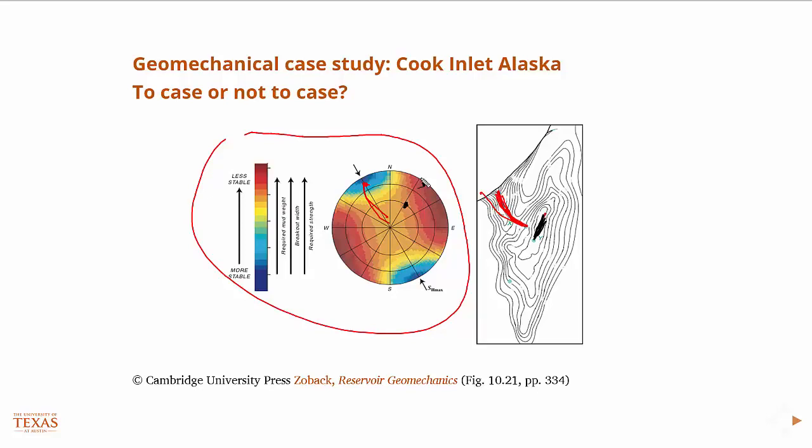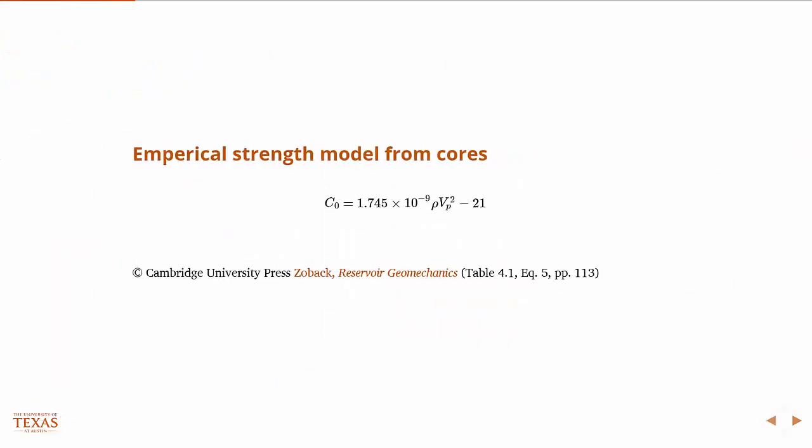If they'd had the geomechanical model or the information up front, then they would have known this, and they could have known to either not drill in that direction or in the kickoffs into these regions that were less stable, then they knew that they would need casing and a sufficient amount of casing. The next thing has to do with the kind of strength things that we've looked at, was to know exactly where to kick off.